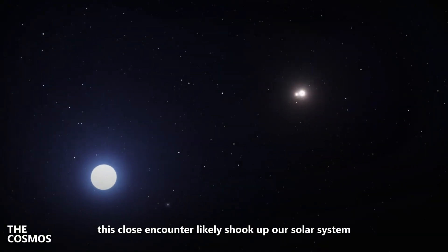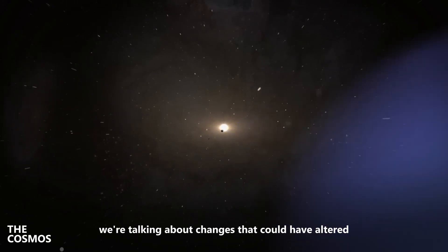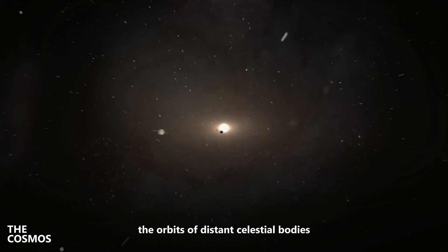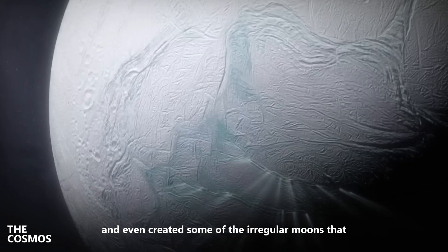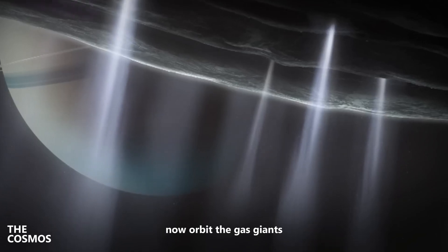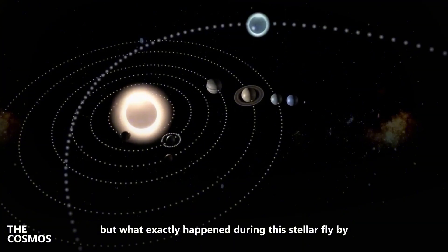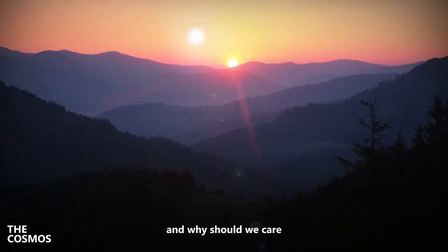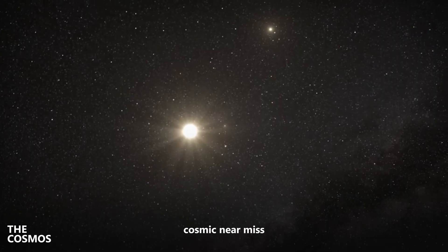This close encounter likely shook up our solar system in ways that are still visible today. We're talking about changes that could have altered the orbits of distant celestial bodies and even created some of the irregular moons that now orbit the gas giants. But what exactly happened during this stellar flyby, and why should we care? Let's dive in and uncover the mysteries of this ancient cosmic near-miss.